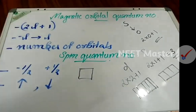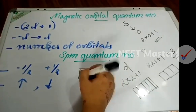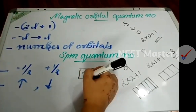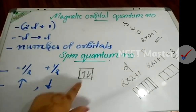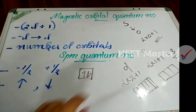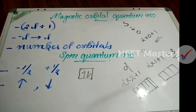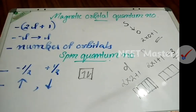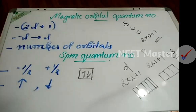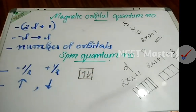There are 2 electrons in each orbital. The spin quantum number represents the two spin states of an electron. One is clockwise and the other is anti-clockwise. This is represented as minus half and plus half — clockwise and anti-clockwise spin.